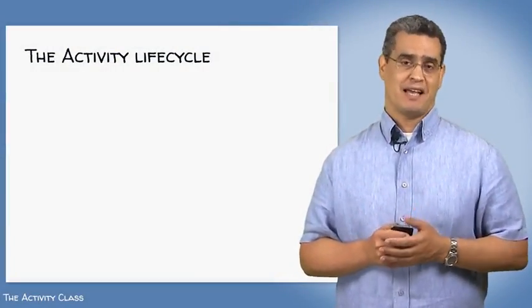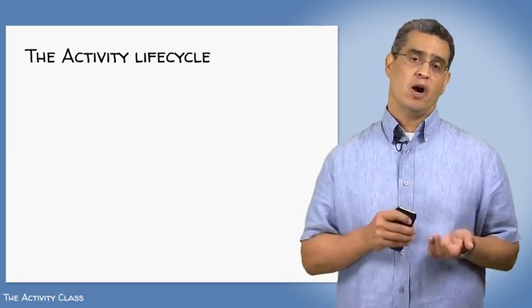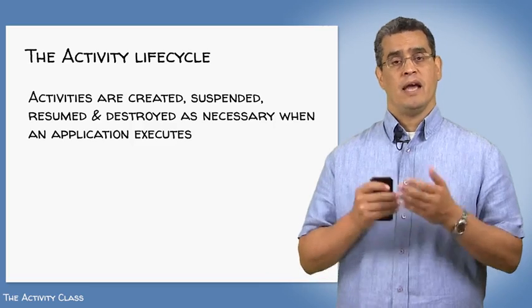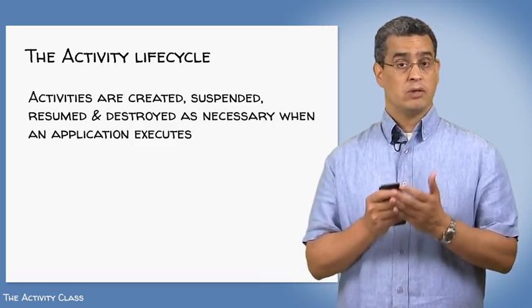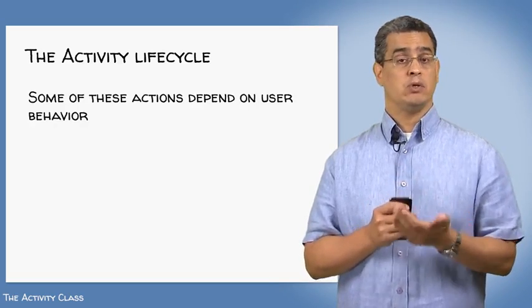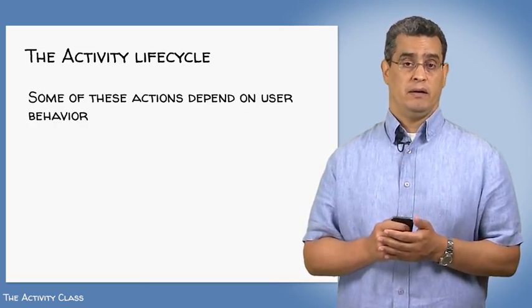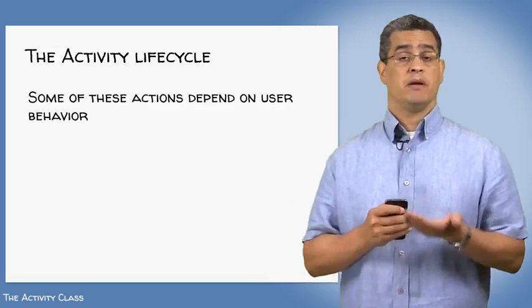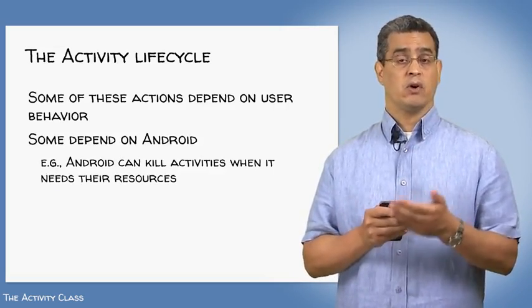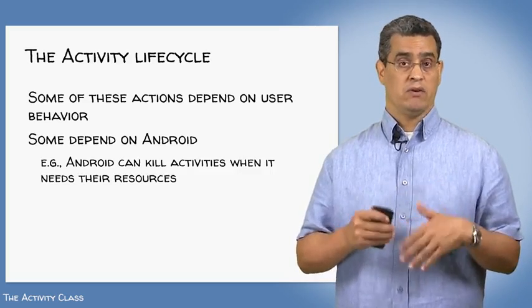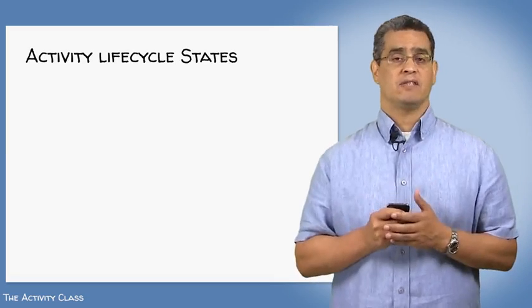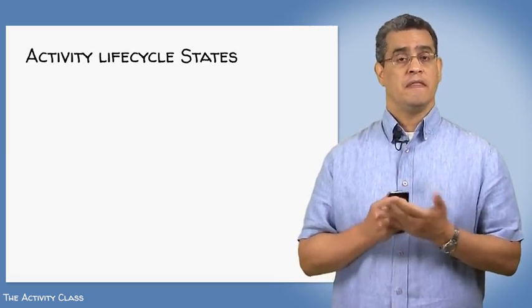As we saw with the task backstack examples, Android activities come and go and come again and go away for good — they have a lifecycle. Importantly, for you as a developer, your applications are not really in control of this lifecycle. Some lifecycle changes depend on choices that the user makes, like pressing the back button or the home button. Other lifecycle changes depend on Android itself — for example, if your device is running low on memory, Android can decide to kill activities that are currently suspended, knowing that it will need to recreate them later if the user navigates back to them.